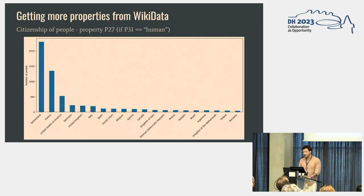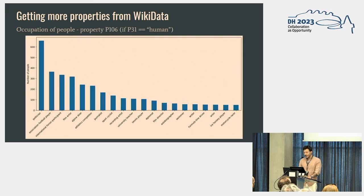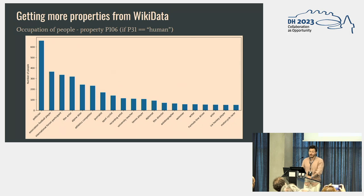For the people themselves, we can look at entities that have the property 'human' and see where they're from — mostly Switzerland, as well as France, and then the US, Germany, and the United Kingdom. And then we can also look at their occupation. Funny enough, and perhaps not that surprising, we get mostly politicians and football players. So I don't know what that tells us about culture, but that's what we get at least for the RTS.